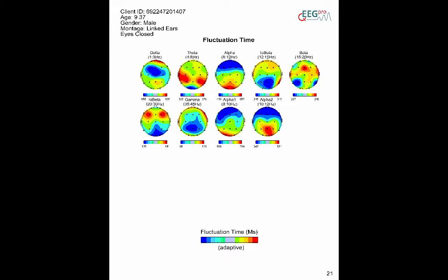The scale is adaptive, meaning that for each frequency band the plot is scaled between the minimum and maximum fluctuation time within that frequency band.